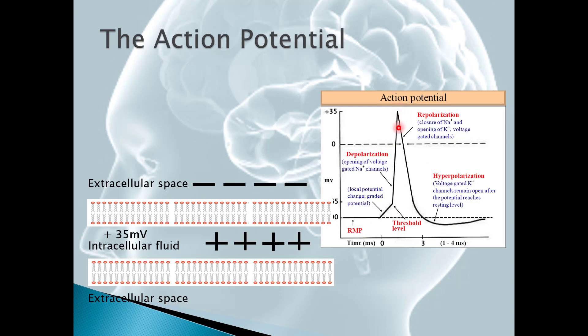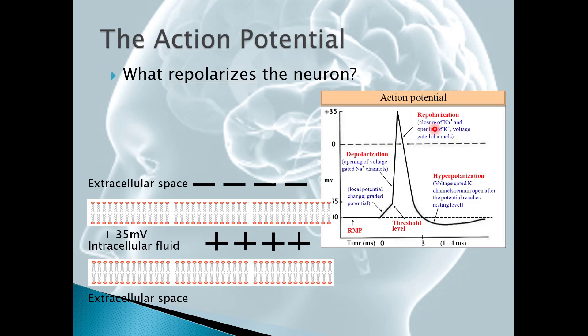So we're up here at the peak. What's going to cause this repolarization? Right here it says the closure of the sodium channels and the opening of those potassium channels. So we just saw the closing of those sodium channels. So now the question is what's going to repolarize the neuron? The opening of those potassium channels. So now we see that our sodium channels here in blue are closed. Our potassium channels are not leaking anymore. They've opened up.